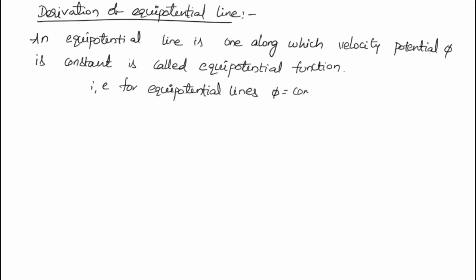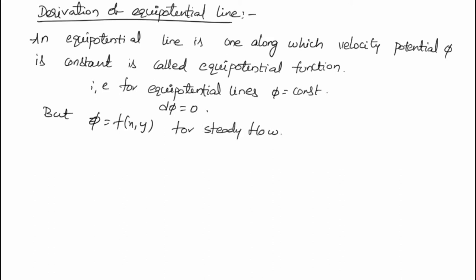For equipotential lines, phi is equal to constant, which means d phi is equal to zero. The velocity potential function is a function of x and y for steady flow, so we have to find out what d phi will be.